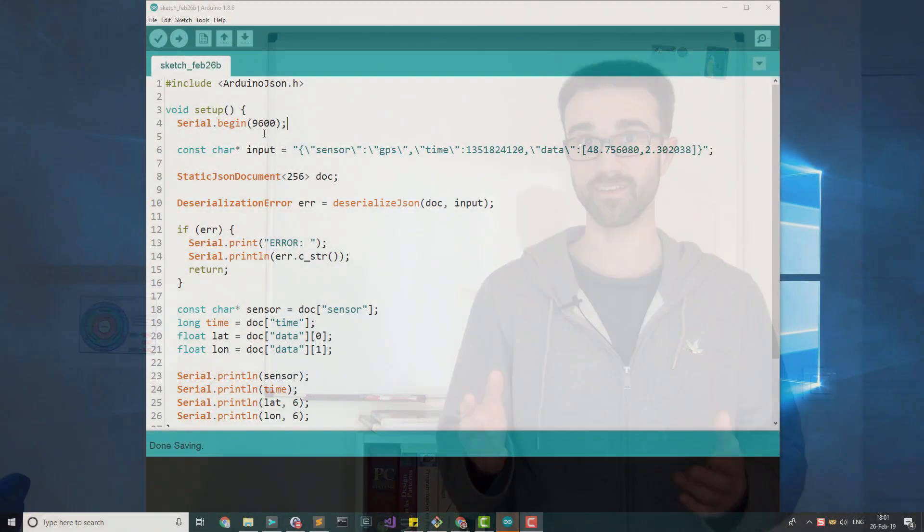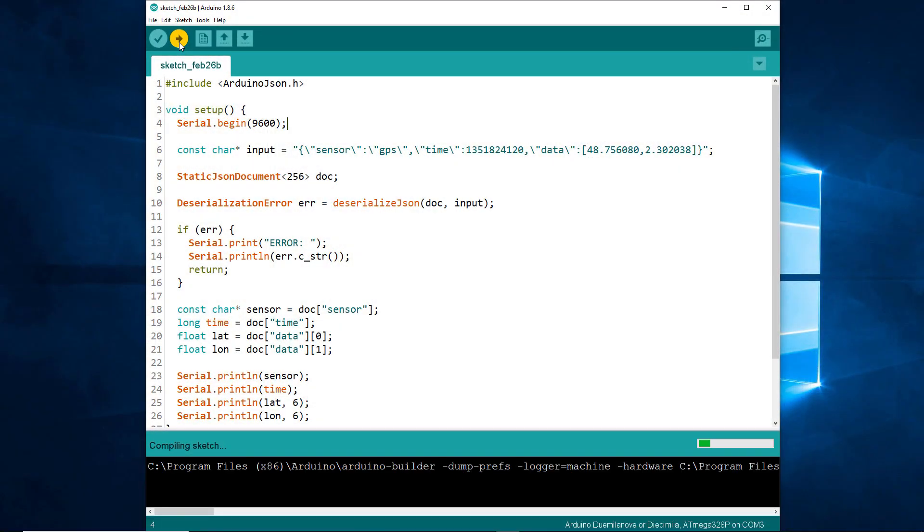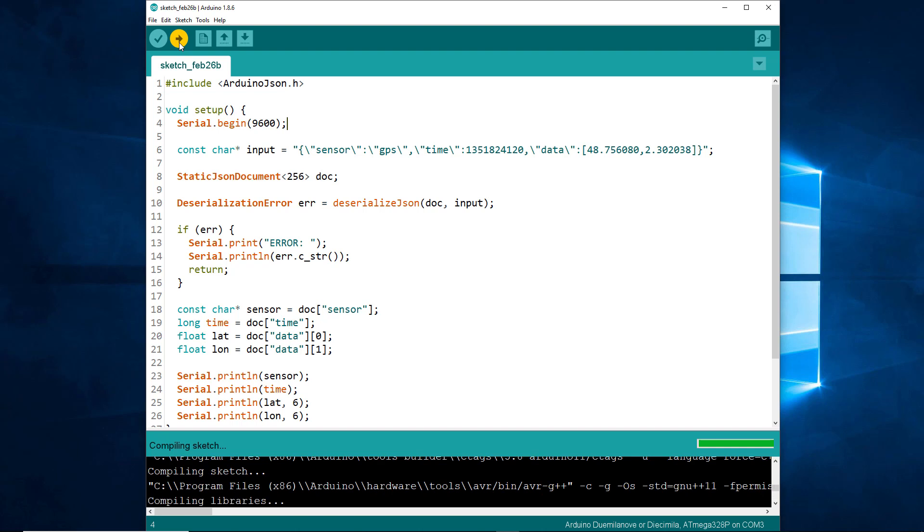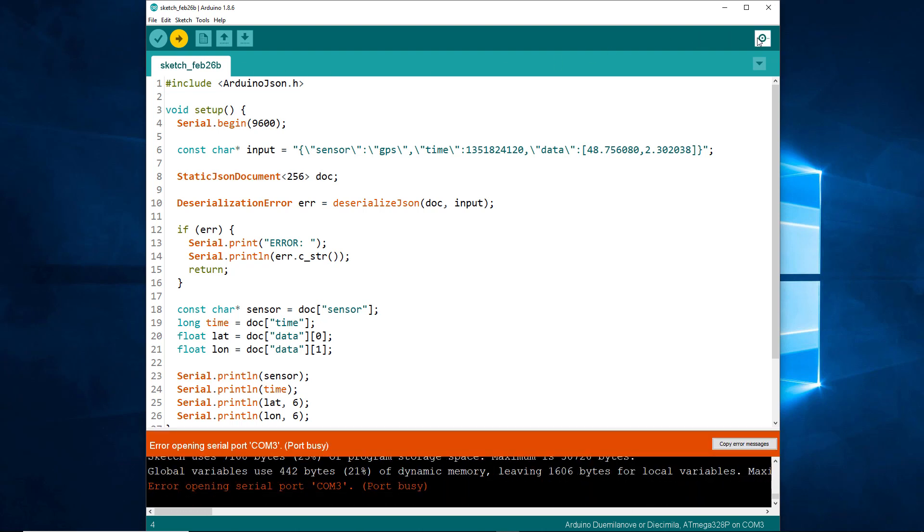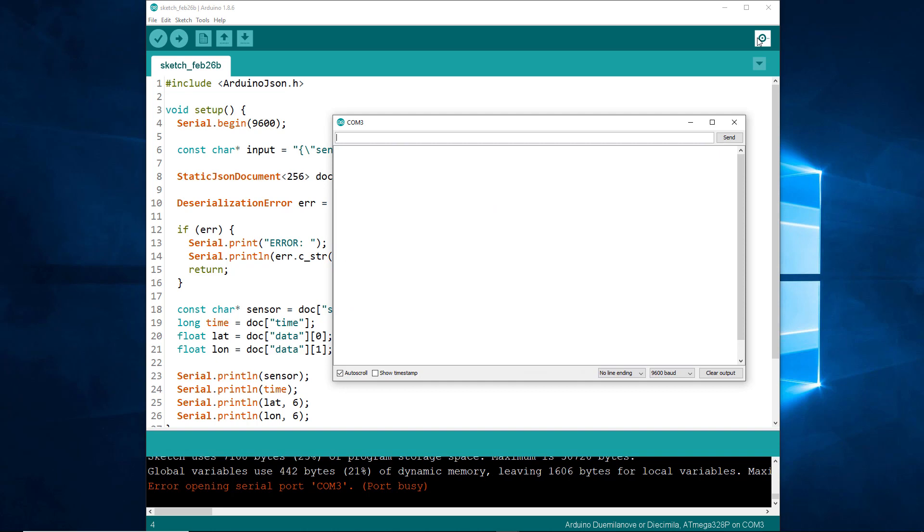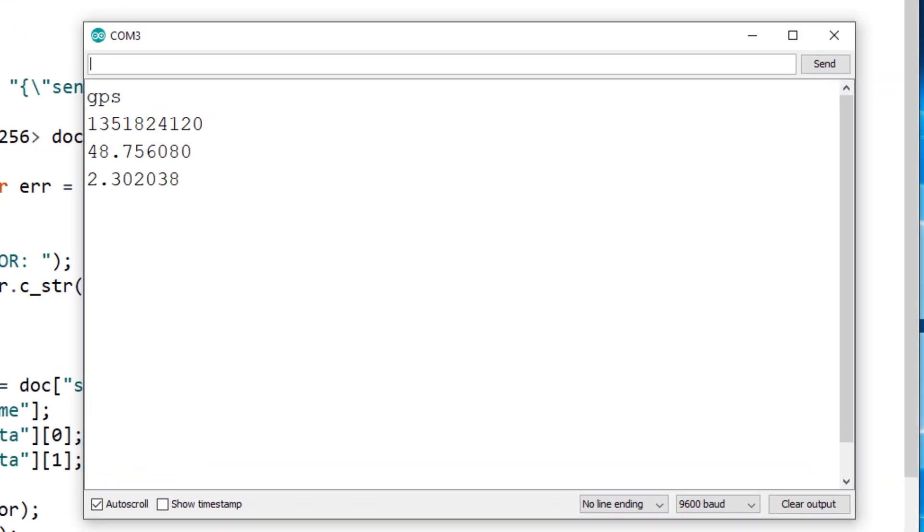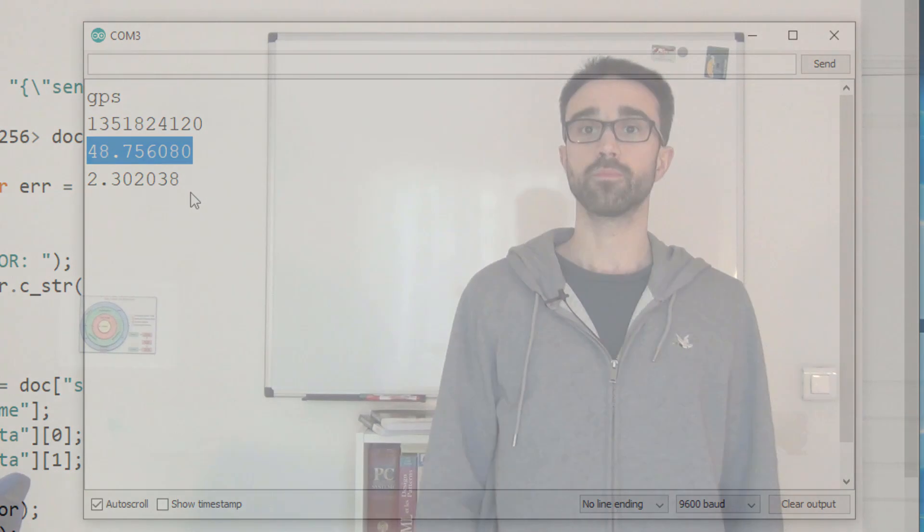It's time to upload and see the result. Ready? Click on the Upload button. Wait. Open the Serial Monitor. Here are the four values: Sensor, Time, etc. Cool! We managed to recreate the example.